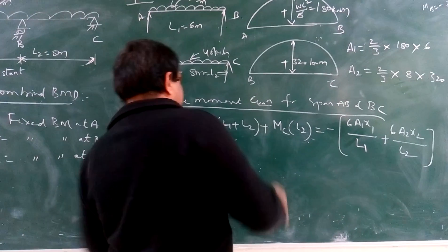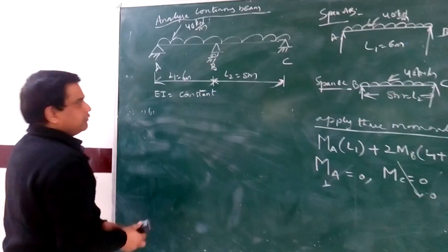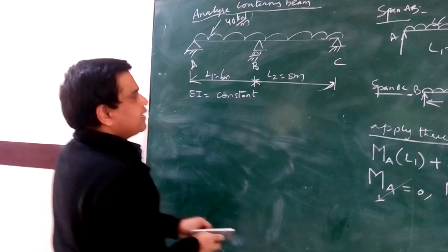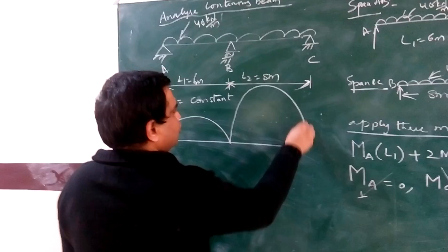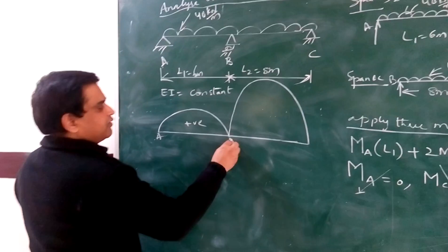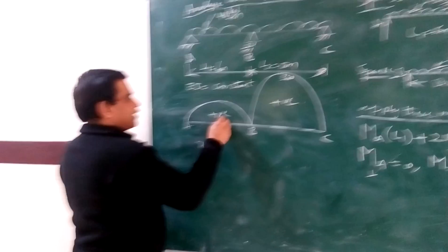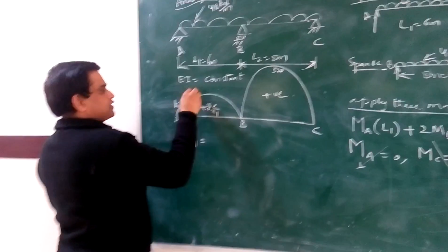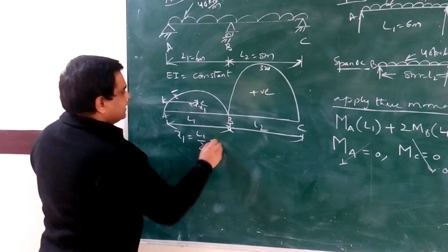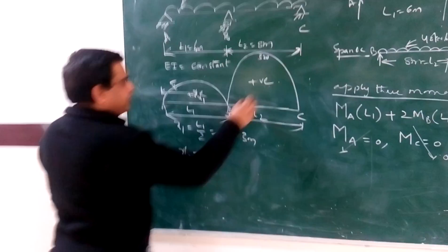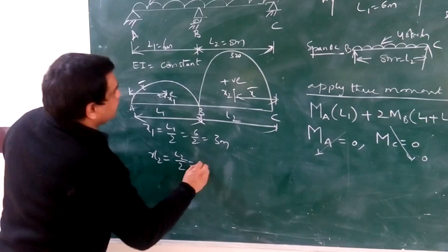The centroid x1 of the first parabolic figure is at L1/2, which equals 6/2 = 3 meters. The centroid x2 of the second parabolic figure is at L2/2, which equals 8/2 = 4 meters. These are the centroidal distances used in the 3-moment equation calculation.